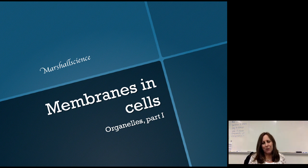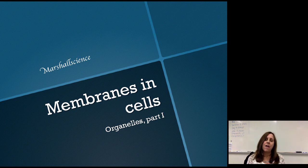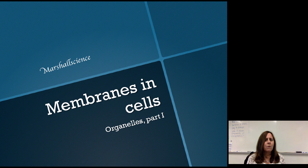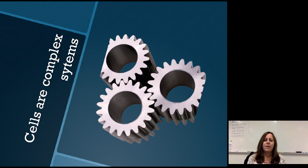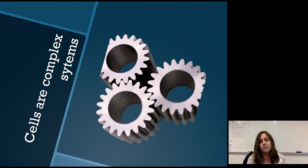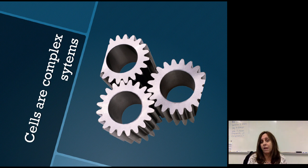Today we're going to talk about the parts of the cell, and we're going to start with a discussion of the parts of the cell that are wrapped up in membranes. Membranes are very important in cell function and we're going to talk about where we find them and what they do for the cell. So first of all, continue to think about the cell as a system. Cells are very complex systems and they have many parts that work together to perform a particular function.